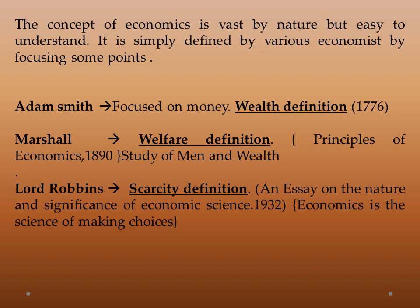In this slide we will see the focused points of the definition, comparing three definitions of famous economists. First, Adam Smith focused only on wealth — hence his definition is called the wealth definition. Then Marshall's welfare definition, and Lord Robbins' scarcity definition. The concept of economics is vast by nature but easy to understand. Adam Smith's wealth definition was famous in 1776. Then came Marshall in 1890, in his Principles of Economics, who focused on welfare — the study of men and wealth.